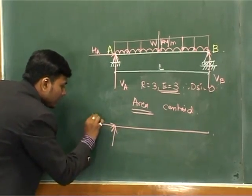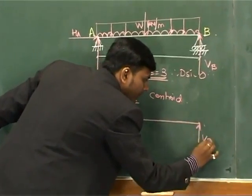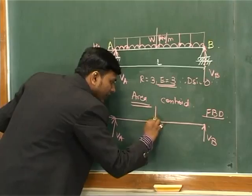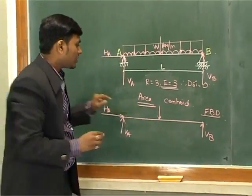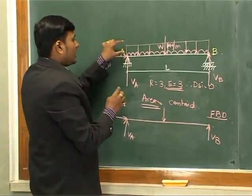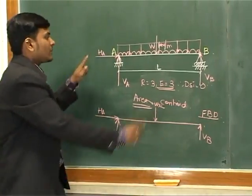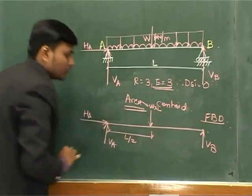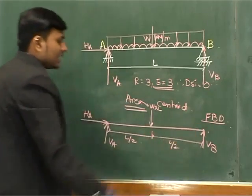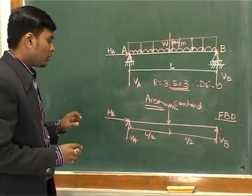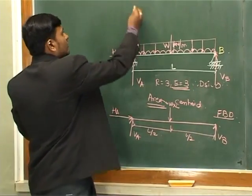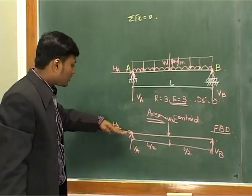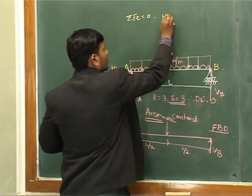The free body diagram of the beam has two reactions at A, one reaction at B, and the converted point load W×L acting at distance L/2 from A. The remaining distance is also L/2, with total length L. Now with the UDL converted to a point load, we apply the three equations of equilibrium.